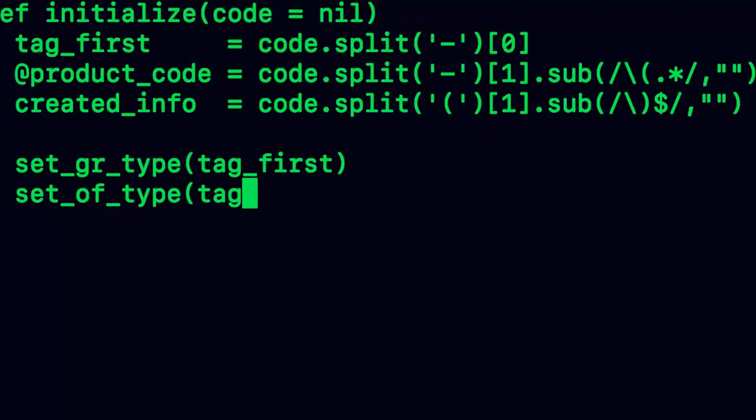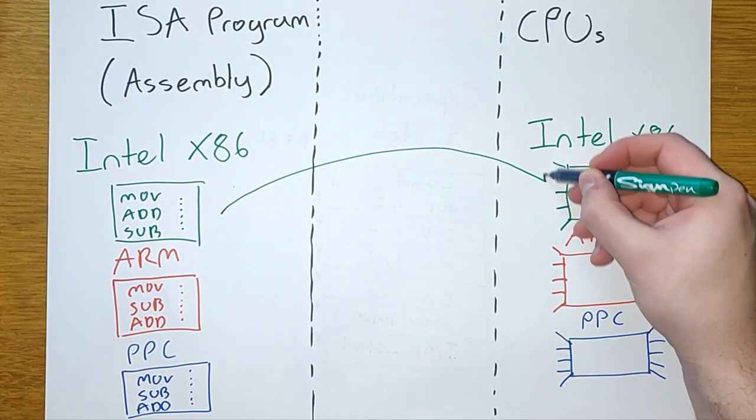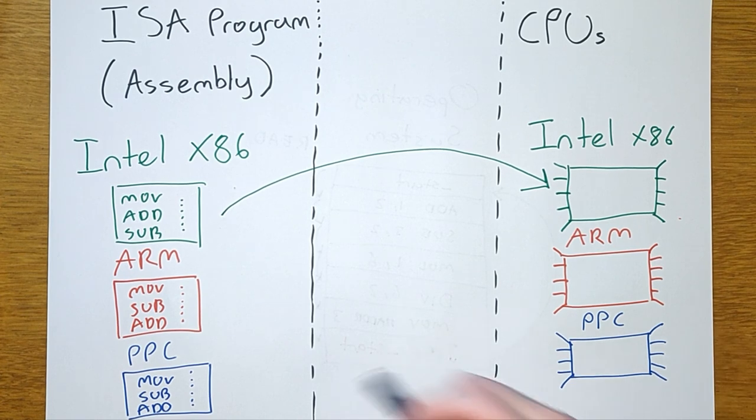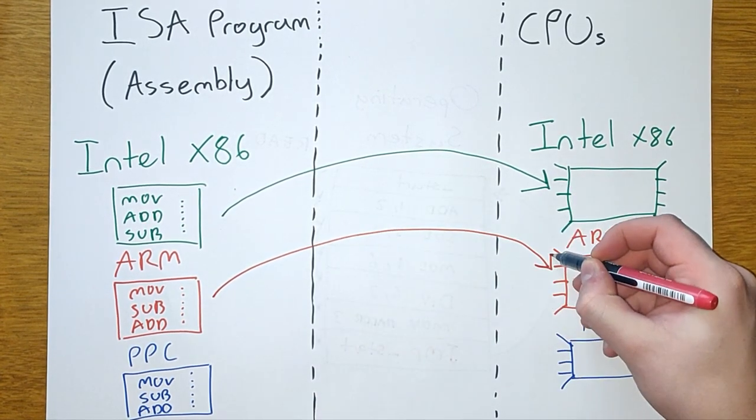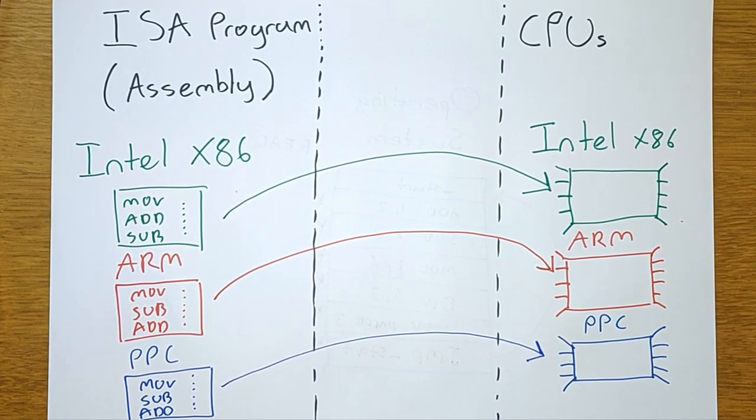You can also control how it behaves by writing your own code, compiling it to the relative ISA, and then running it on your computer that understands the ISA. Remember, you write Intel instructions for Intel processors, ARM instructions that are understood by ARM processors, and PowerPC instructions that are understood by PowerPC processors.